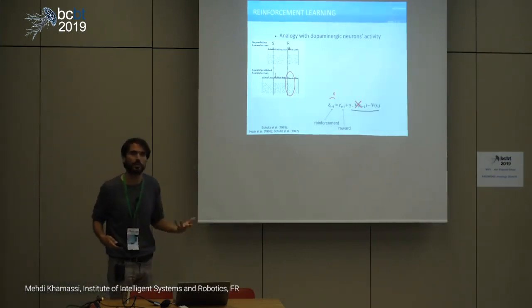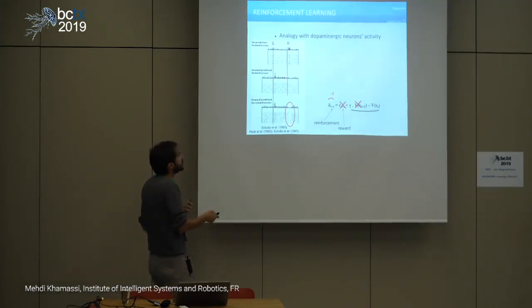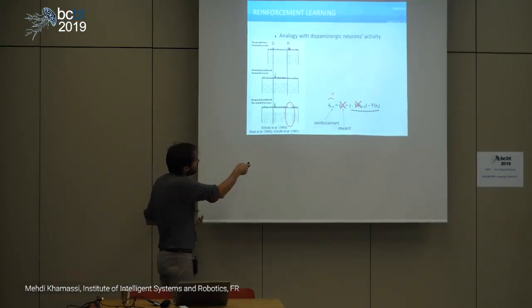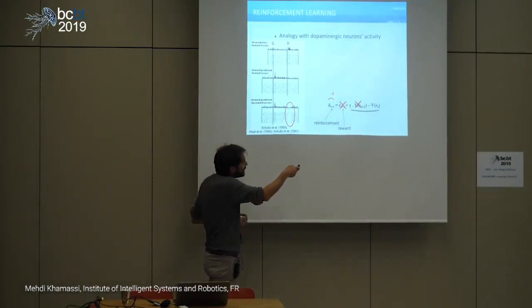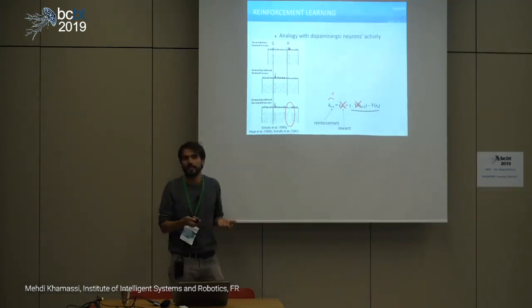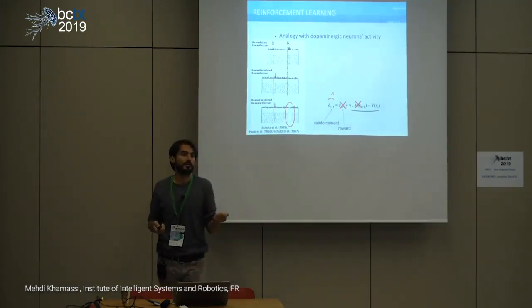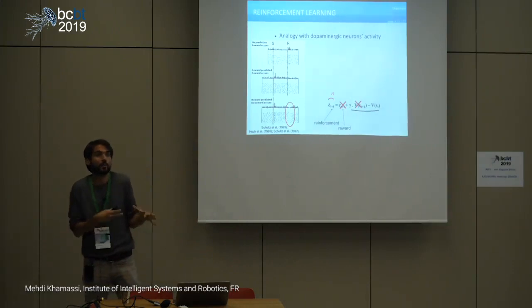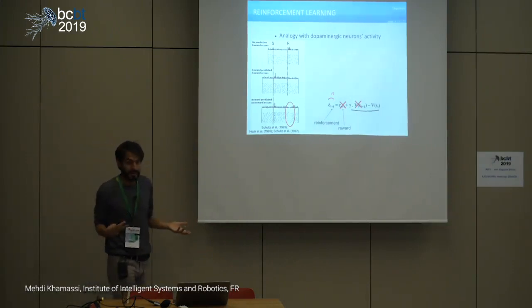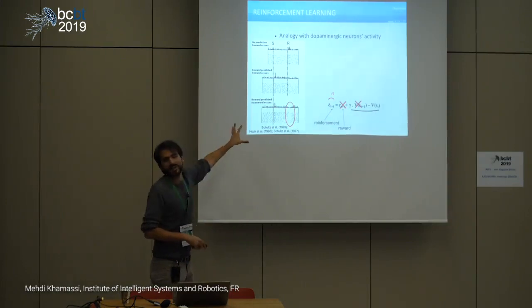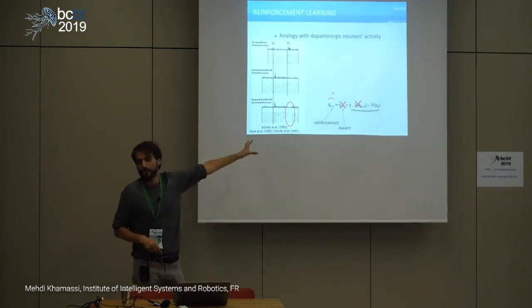The animal sees a decrease in dopaminergic activity — a negative reinforcement. The model predicts this is because you expected something and don't get it, and maybe that's a sign the world has changed and there's a need to adapt. This was a massive discovery, already 20 years ago, and still incredibly influential.